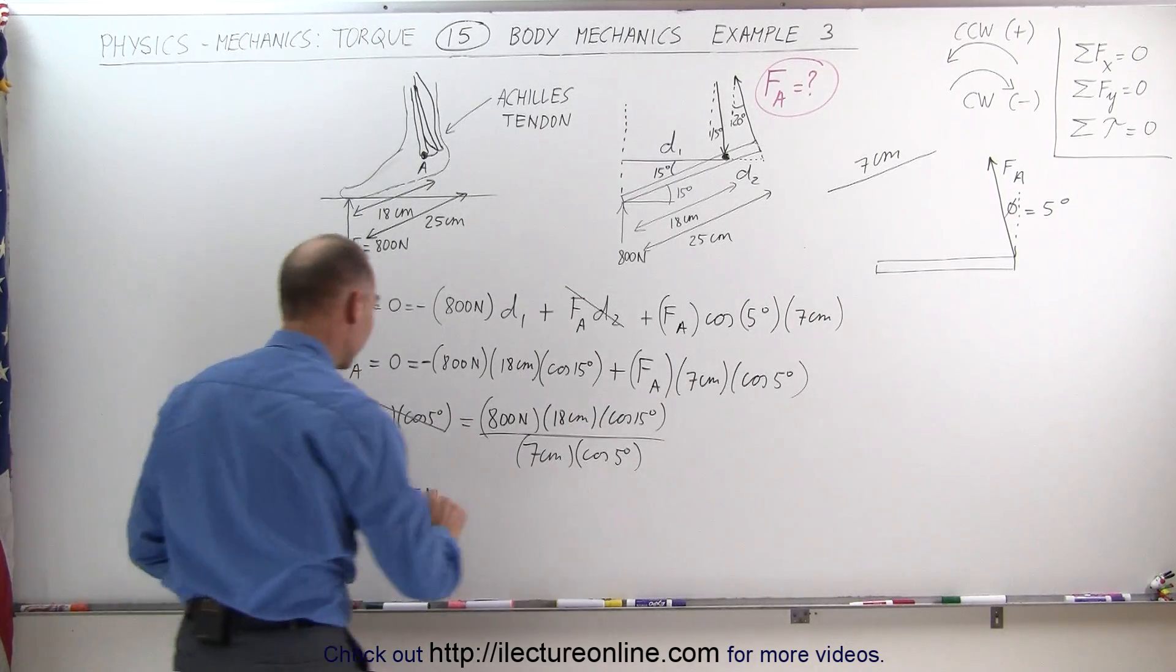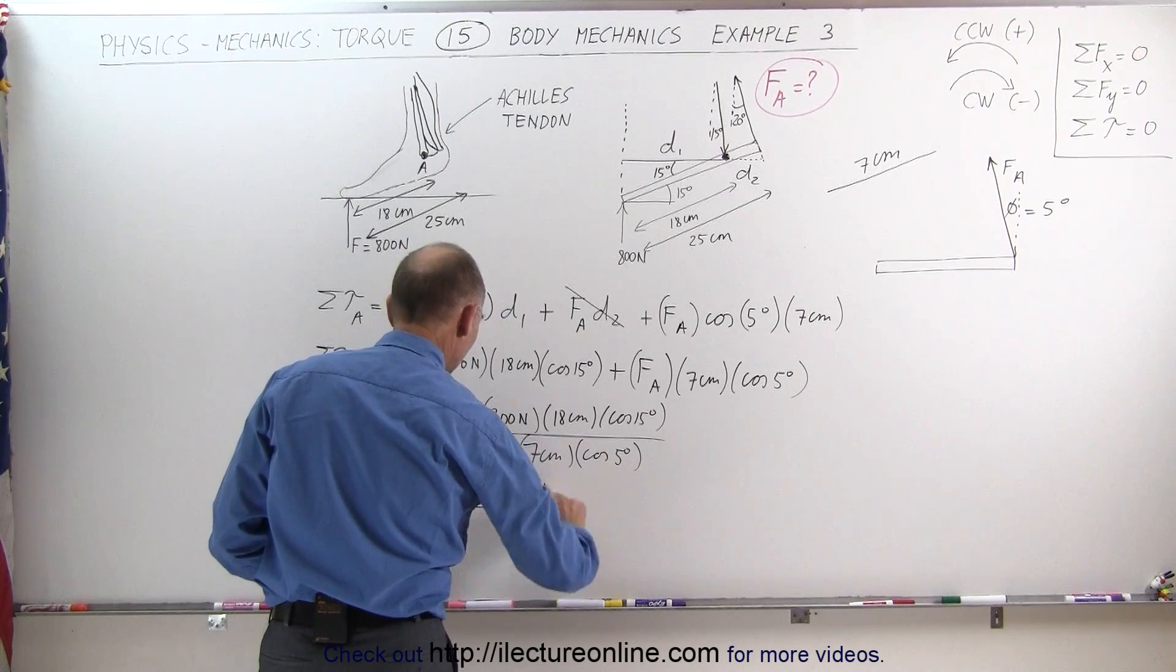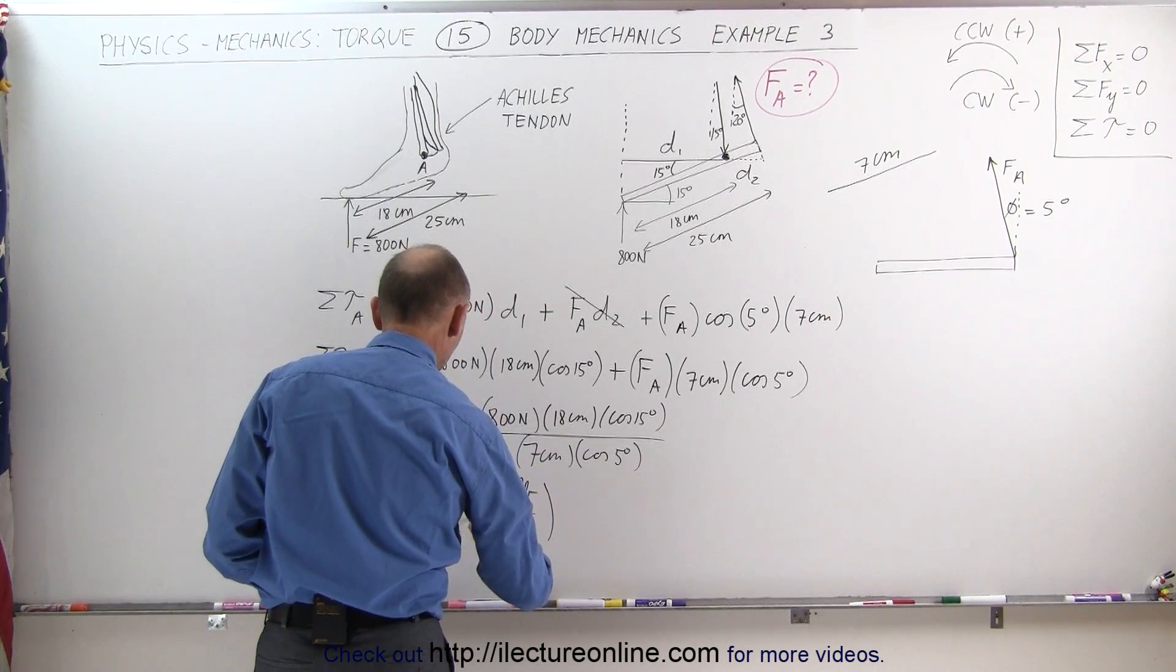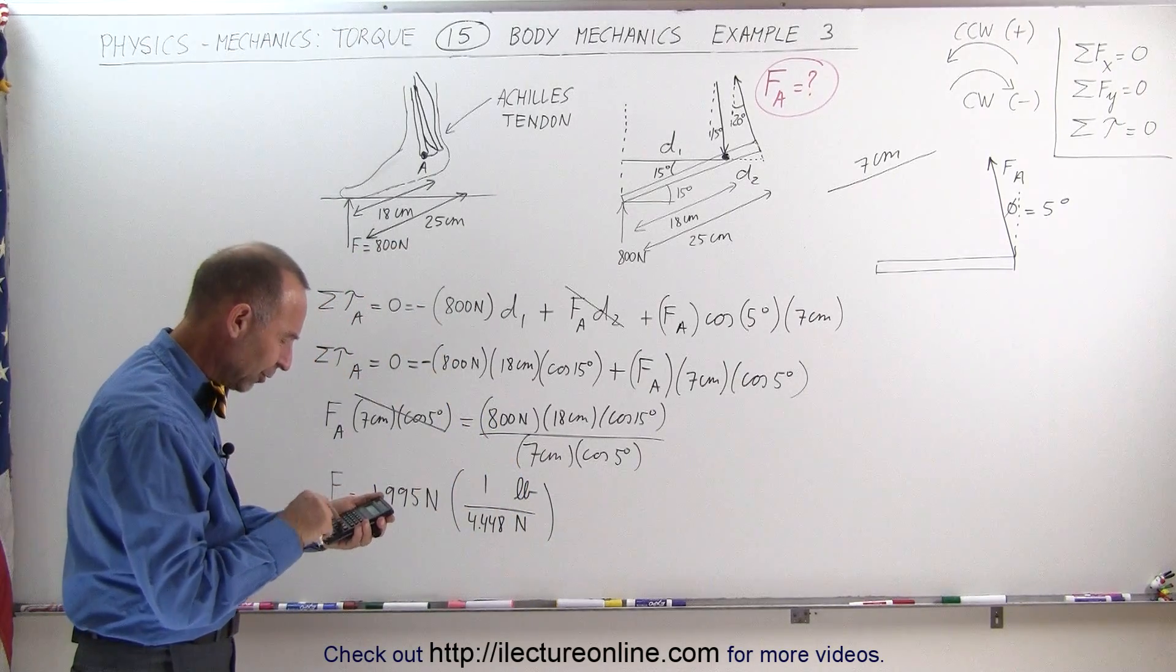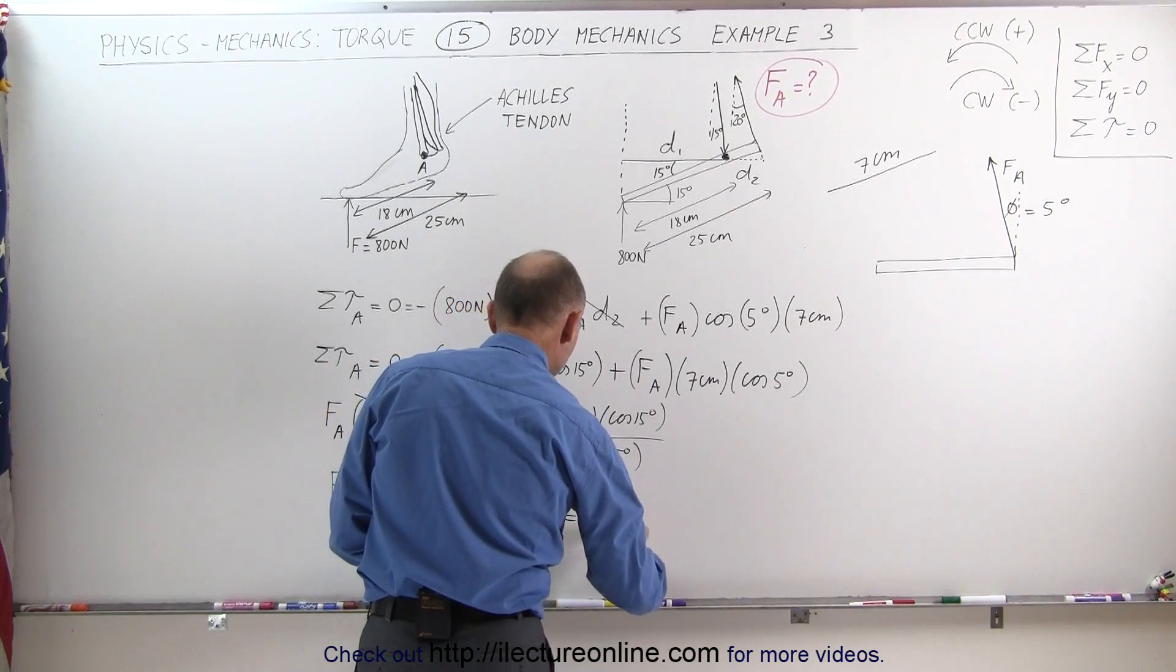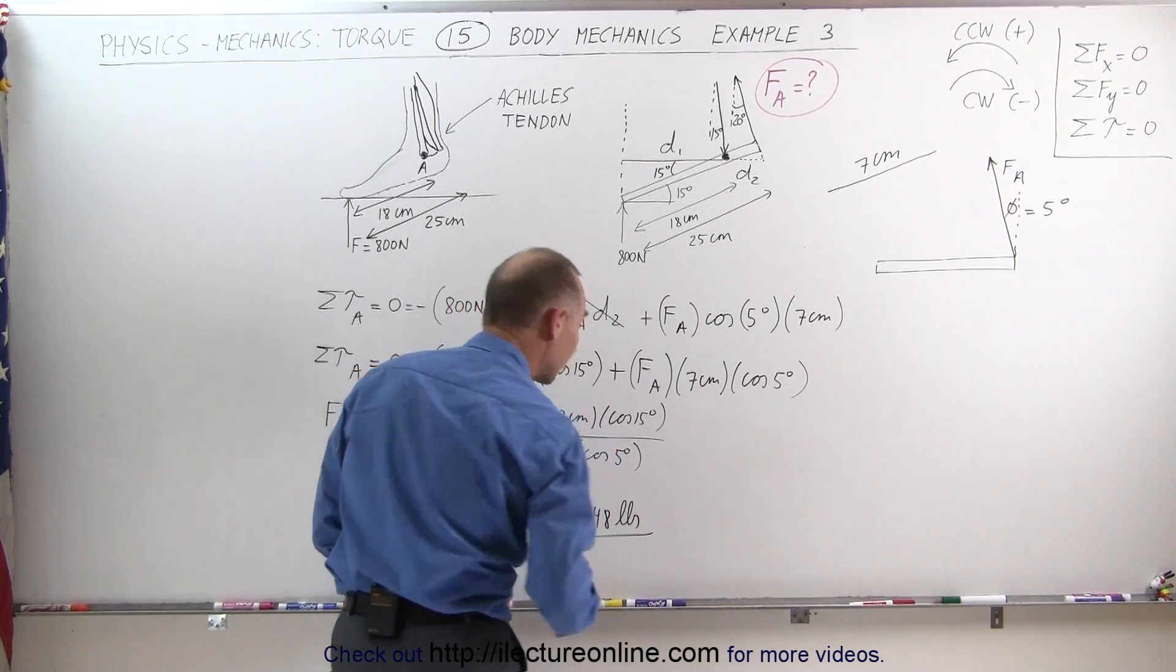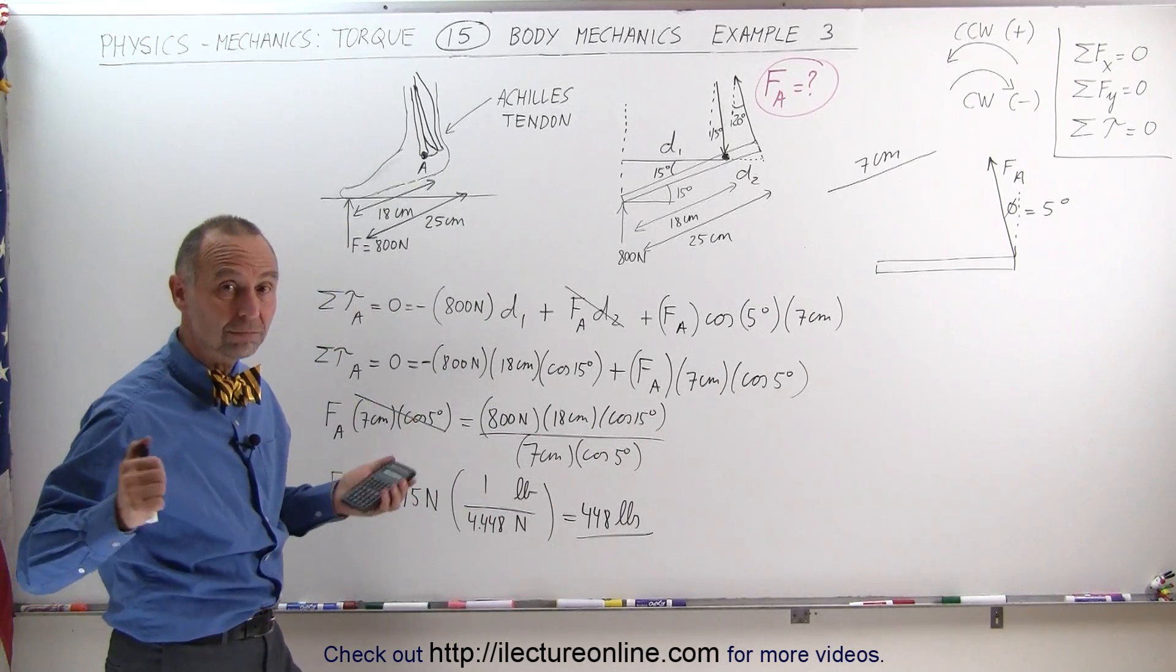Let's convert that to pounds and see how big a force that is. We have pounds in the numerator, newtons in the denominator, 1 pound equals 4.448 newtons. So divide by 4.448, that's a force of 448 pounds. Wow! And that's just to hold a person in place on one foot like this.